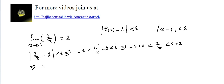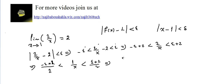Now I need to find X, so I divide by 2: (minus epsilon plus 2) times one-half less than 1 over X less than (epsilon plus 2) divided by 2. Taking the reciprocal gives: 2 divided by (2 plus epsilon) less than X less than 2 over (2 minus epsilon).